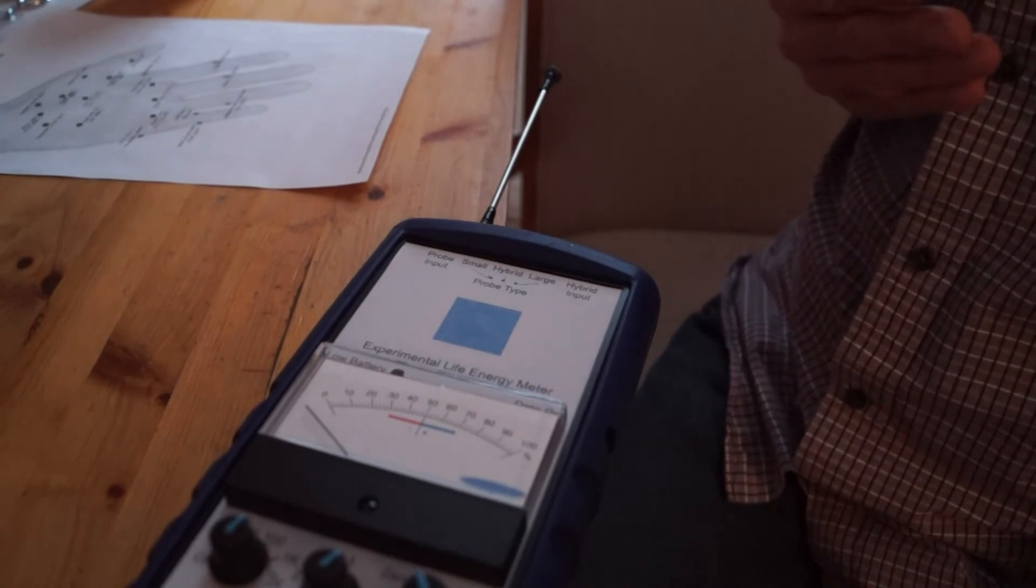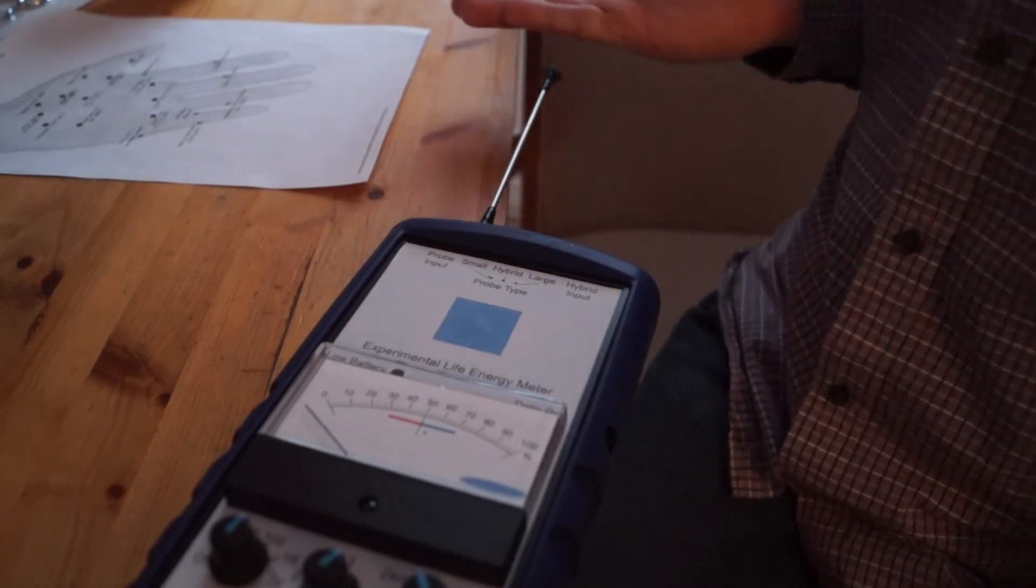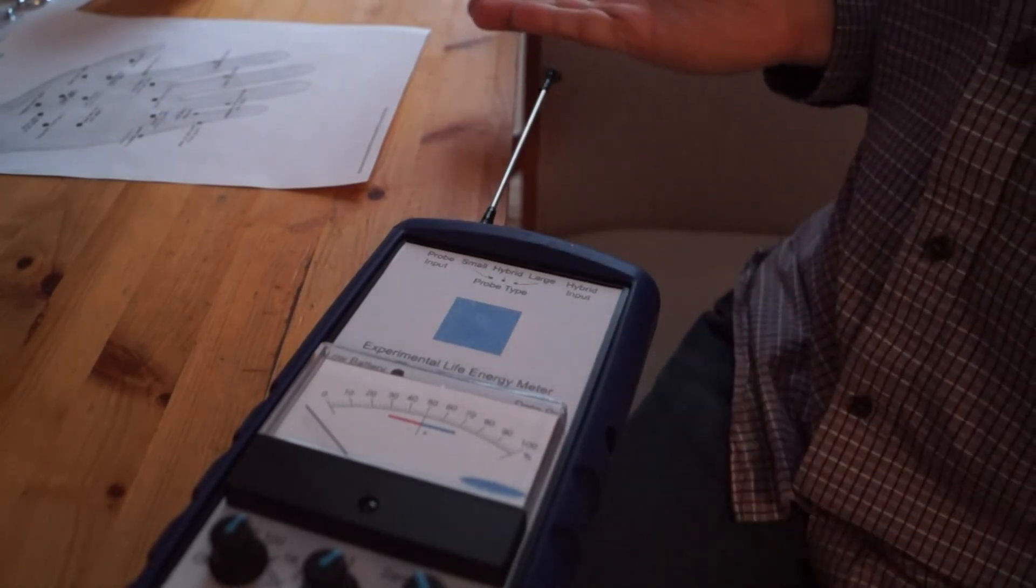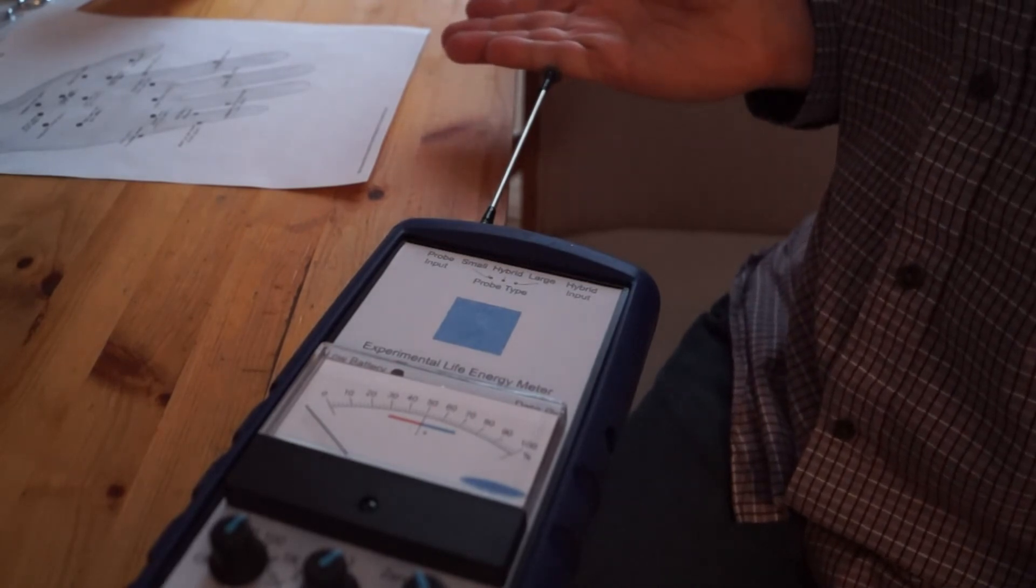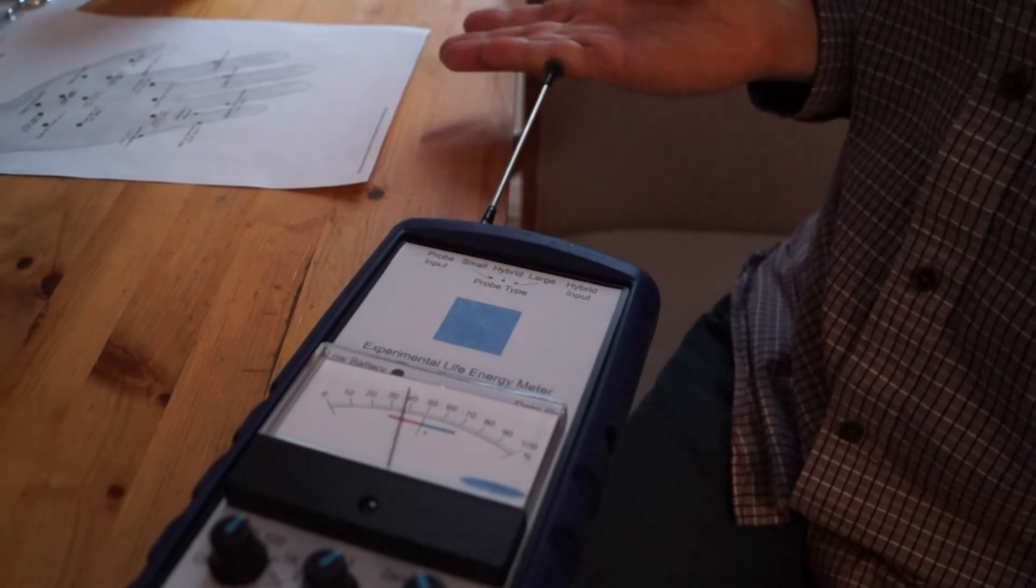Now we're going to try the H10 point that's on the small finger of the right hand. And it might take some alignment to get it right. Let's see if I can get it.